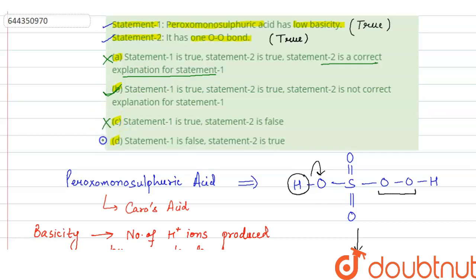Options C and D will also be wrong. So the final answer is: statement 1 is true, statement 2 is true, and statement 2 is not the correct explanation for statement 1. This is the answer.